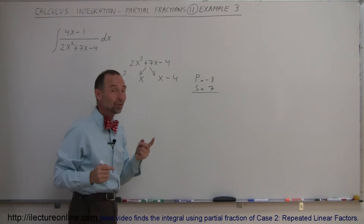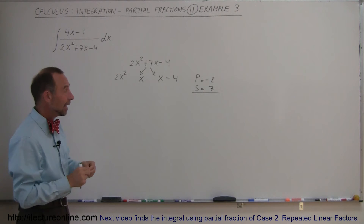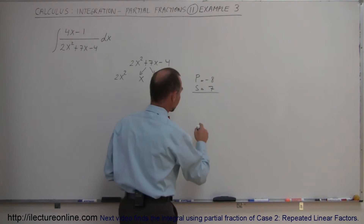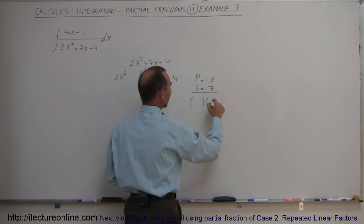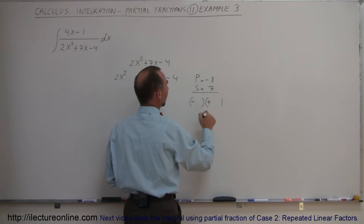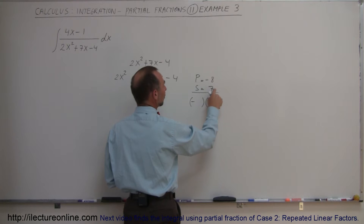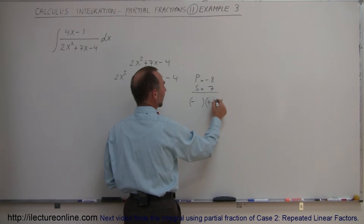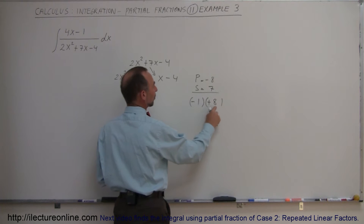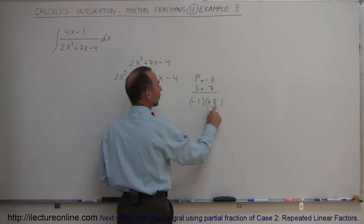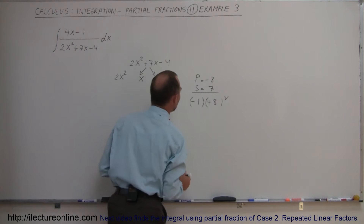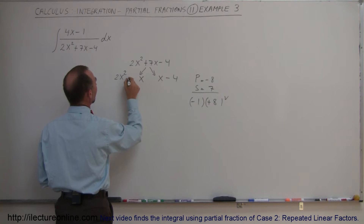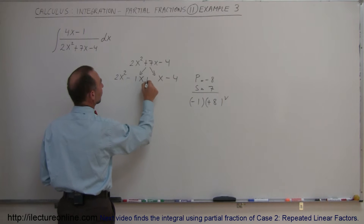I'm looking for two numbers: when I multiply them I get -8, and when I add them I get +7. The signs need to be different because multiplying gives a negative, but adding gives +7. That means the larger number must be positive. A positive 8 and a minus 1 work — because -1 × 8 = -8, and -1 + 8 = +7. So I plug in -1x and +8x.